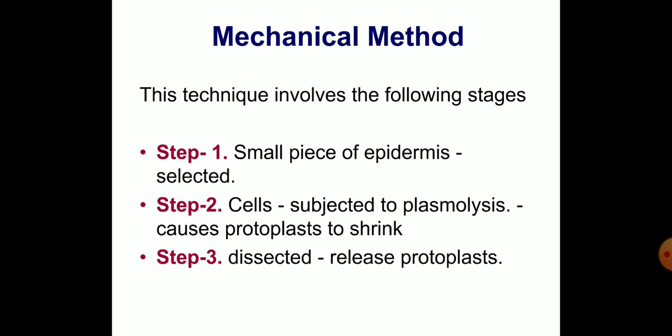This technique involves the following stages. In step 1, a small piece of epidermis from a plant is selected. In step 2, the cells are subjected to plasmolysis, which causes protoplasts to shrink away from the cell wall. In step 3, the cell is dissected to release the protoplasts.